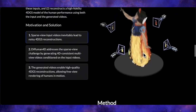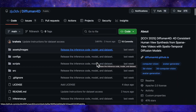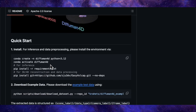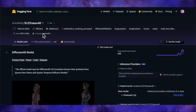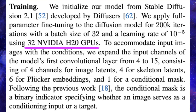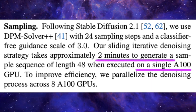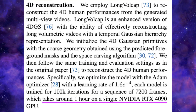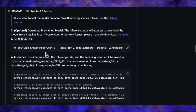For developers and AI tinkerers: the team has released everything. The code is on GitHub under a permissive Apache 2.0 license, and the repository includes a full guide on how to install it and download the pre-trained models from Hugging Face. They've even released the scripts used for processing the dataset. You'll need some serious hardware — the model was fine-tuned from Stable Diffusion 2.1 over 200,000 iterations using 32 NVIDIA H100 GPUs. To generate a short 48-frame sequence takes about two minutes on a single NVIDIA A100 GPU, and the final reconstruction step to create the interactive 4D Gaussian splatting model takes about an hour on a single RTX 4090. It's computationally hungry, but for a research or commercial project, this is becoming increasingly accessible.